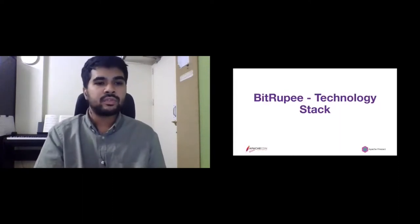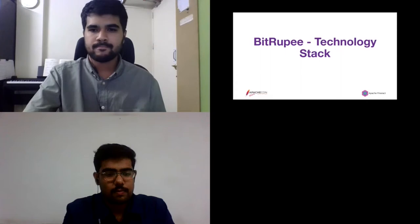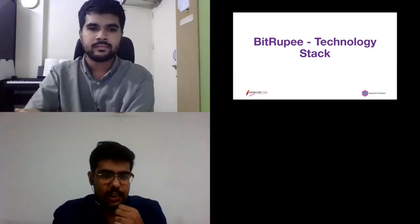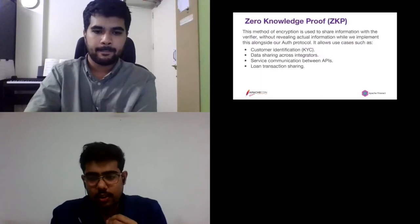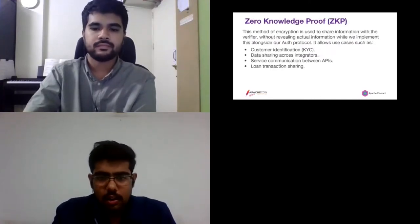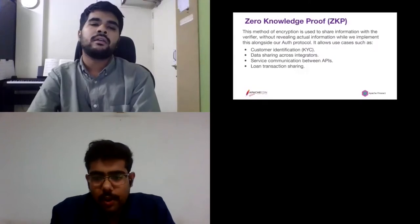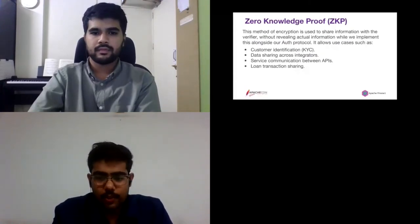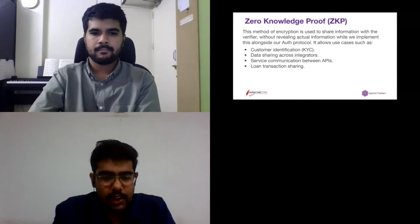Now let's move on to the technology stack. Advait and Saran will discuss more about the technology stack for BitRupee. Zero knowledge proof is a method by which one party can prove to another party that they know a certain value X without conveying any information apart from the fact that they know the value of X. It allows use cases such as customer identification (KYC), data sharing across integrators, service communication between APIs, and loan transaction sharing.